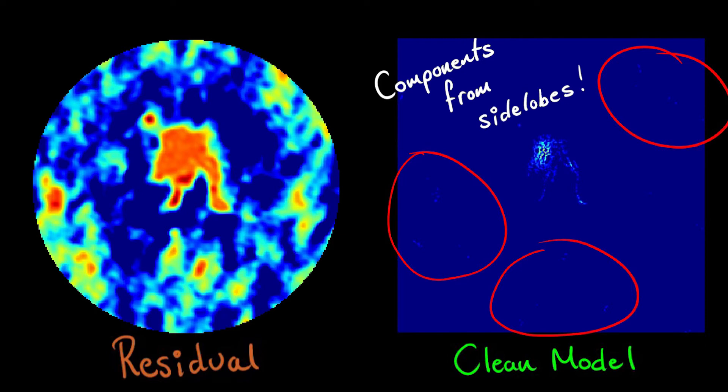In this case, this extra model information moves flux from our source into the side lobes, and would be especially problematic if we were generating a model to self-calibrate our data.